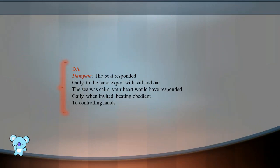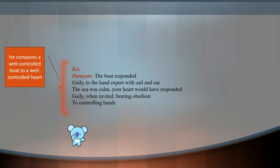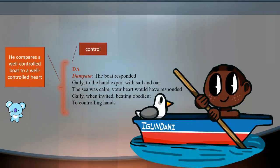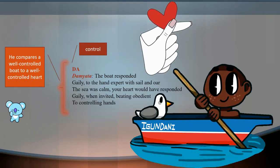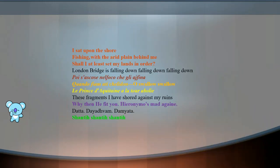The last DA, Damyata, means control. This part suggests that a well-controlled boat is similar to a well-controlled heart. If the beating of the heart is controlled then you would not betray, you would not be lost. The boat responded gaily to the hand expert with sail and oar. The sea was calm. Your heart would have responded gaily when invited, beating obedient to controlling hands. So control your heart as a suggestion.